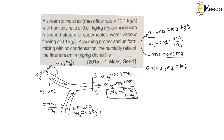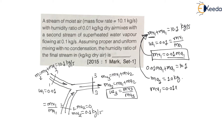Solving for mass of air 1 gives mass of air 1 = 10 kg per second. Substituting back: mass of vapor 1 = 0.01 times 10 = 0.1 kg per second.